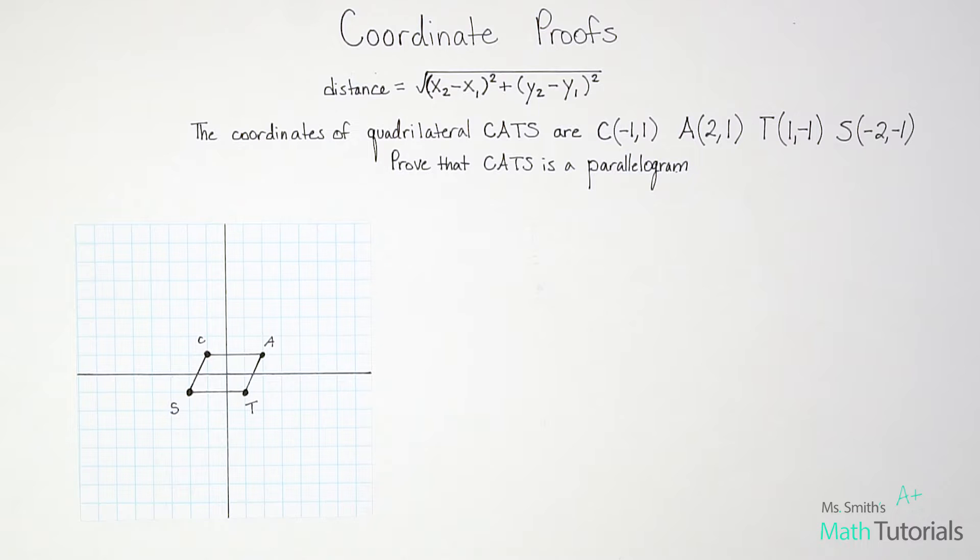And then go ahead and connect your points. Okay, so now that we have those plotted, I could say that CATS definitely looks like a parallelogram, right? But they're asking us to prove it, like show the math behind this. So just saying it looks like a parallelogram is not good enough. We have to actually prove it.